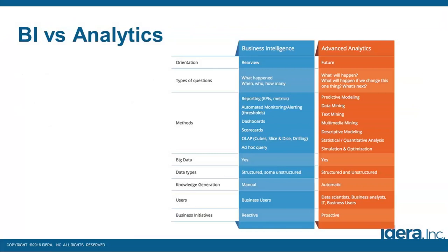A useful side-by-side comparison: think of BI as backward-looking — looking in the rearview mirror — and analytics as looking at the future. With BI, we answer questions like what happened, when, who, how many. With advanced analytics, we ask what will happen, what will happen if we change this, what's next. Typically in BI we see reporting with KPIs and metrics, dashboards, scorecards, and OLAP — analytical processing, cubes, slice and dice. The buzzwords with analytics are predictive modeling, data mining, text mining, multimedia mining, descriptive modeling, and statistical quantitative analysis.